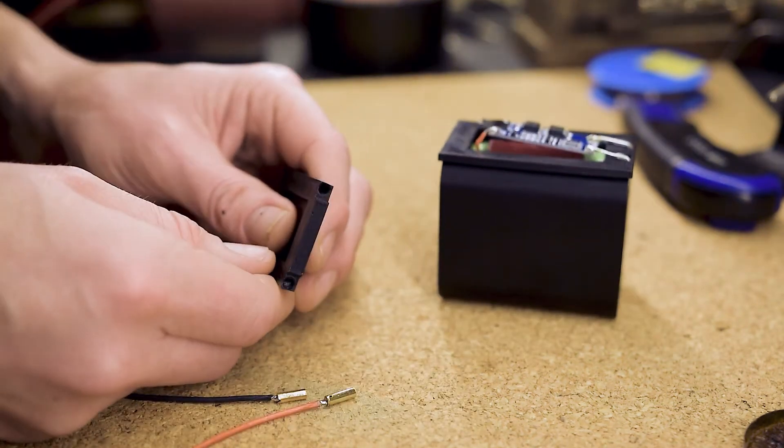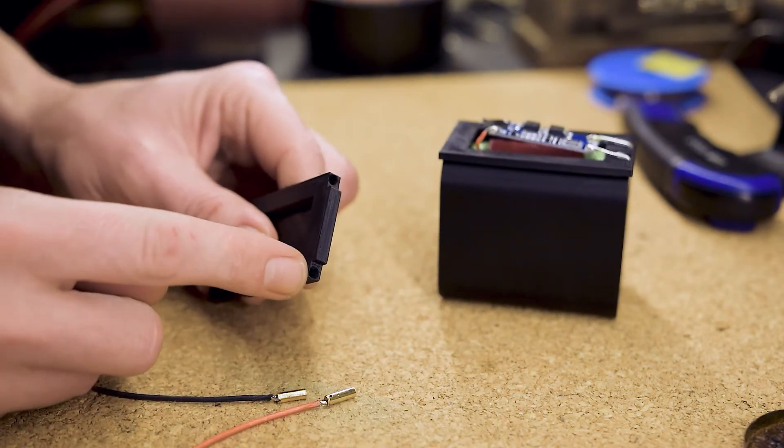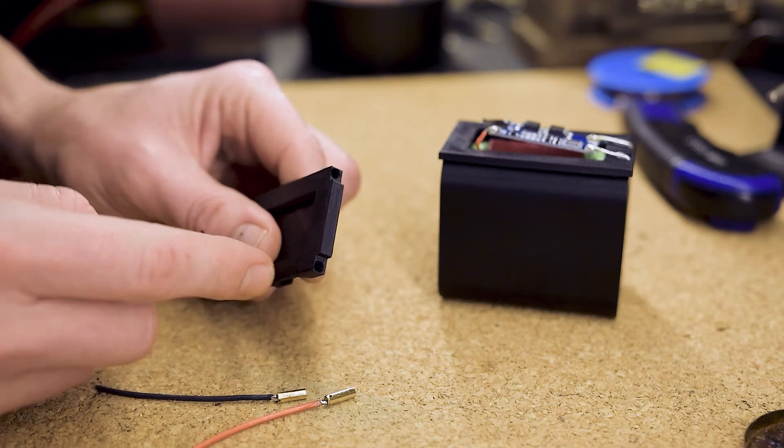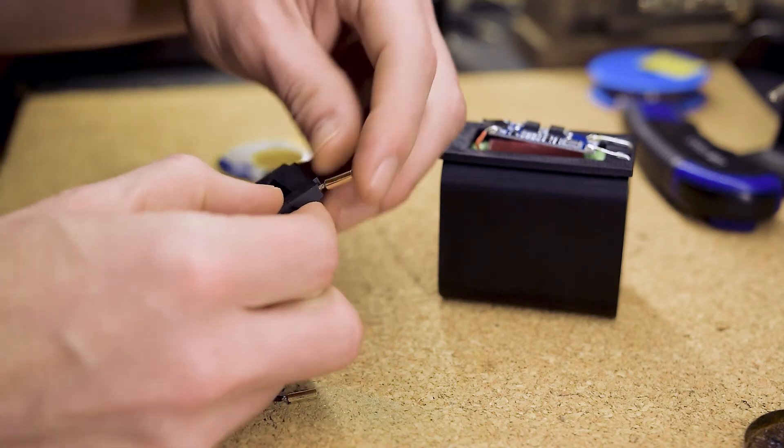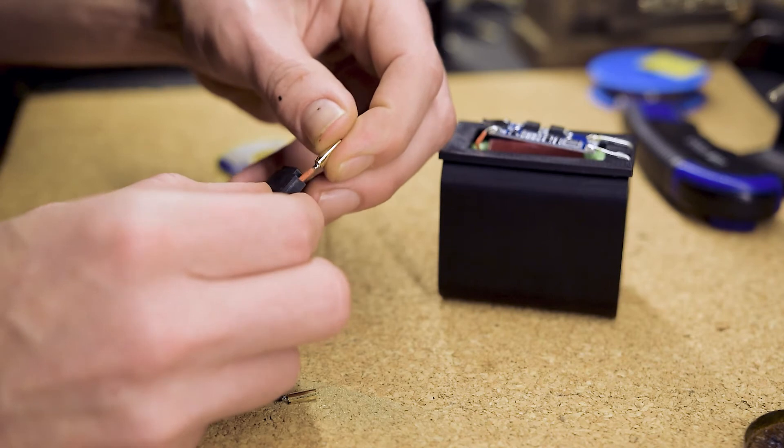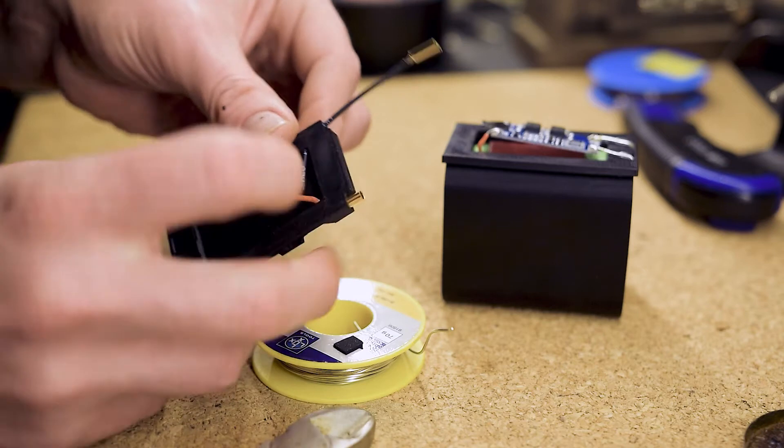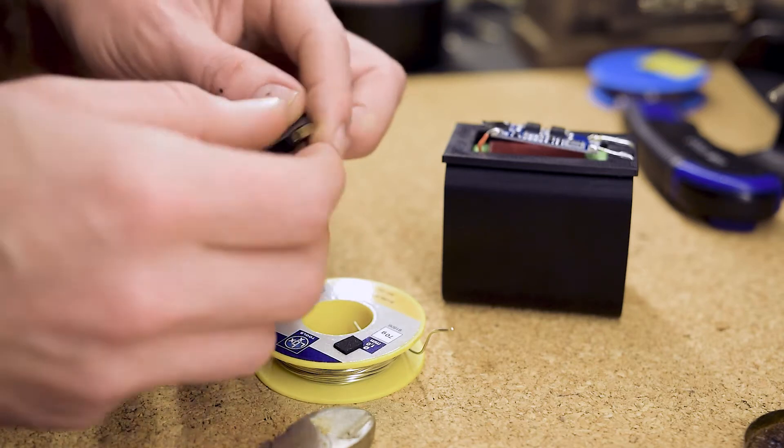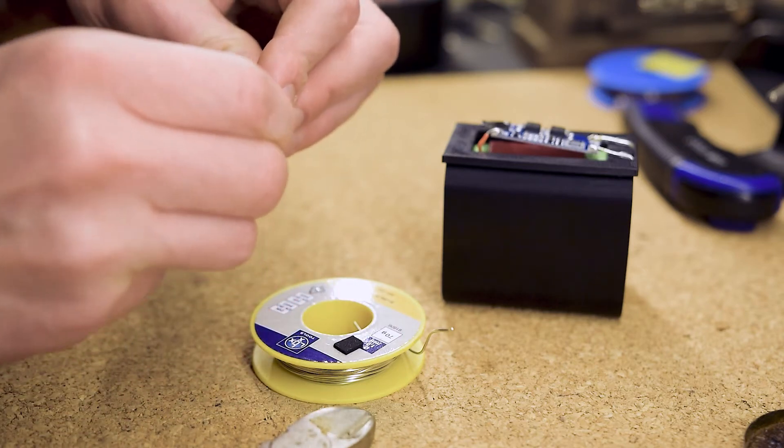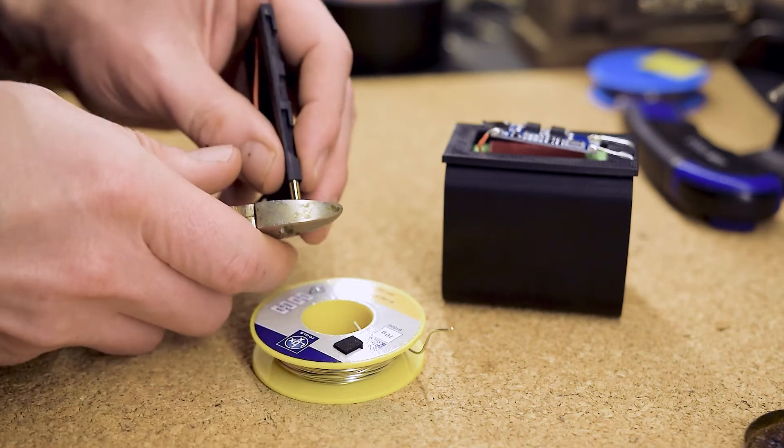Before we can do that, we have to insert the bullet connectors into the provided holes of the lower base plate. You insert the cables from the outside and push the connector in until it moves no more. Please pay attention to the right polarity. Afterwards, just add a drop of super glue from the opposite side of the hole to fix the connector in place.